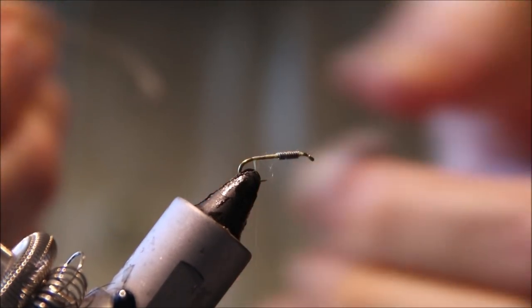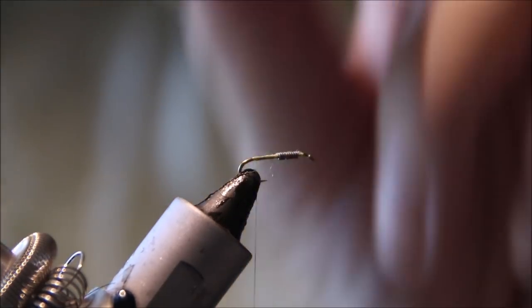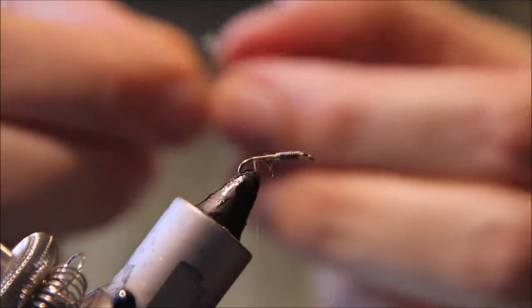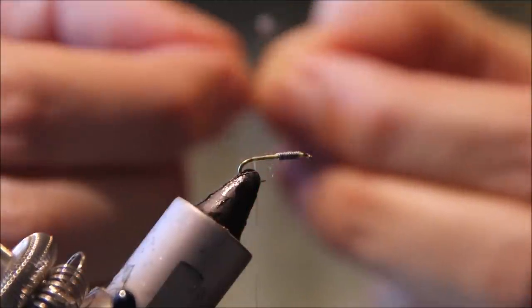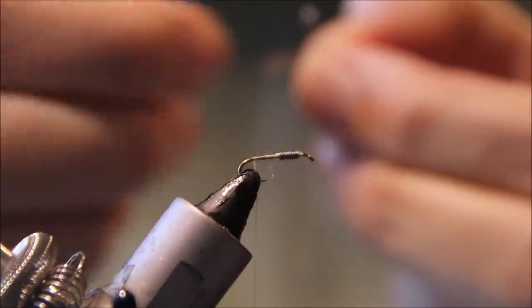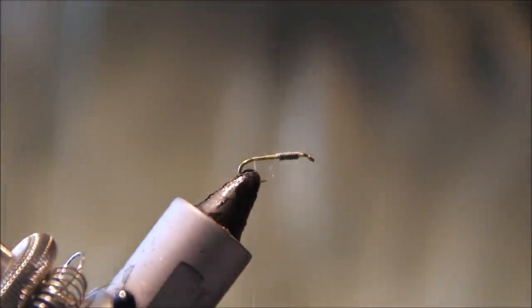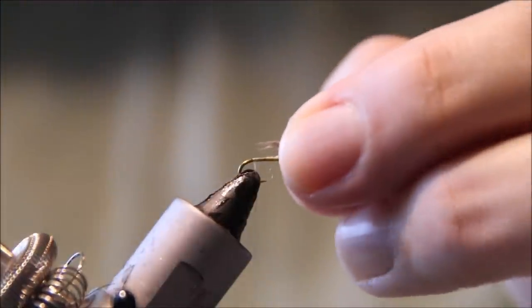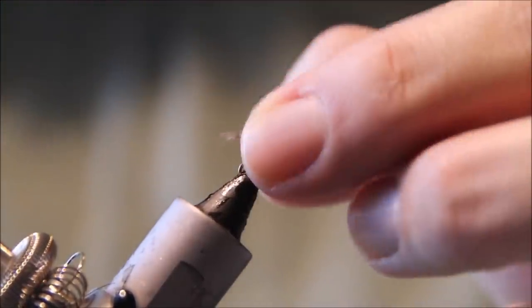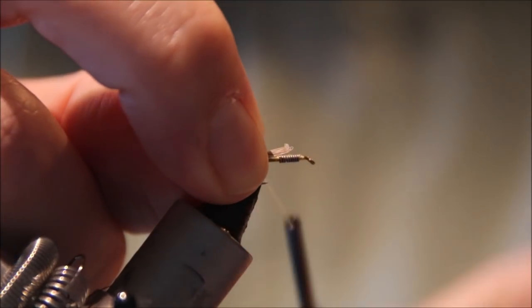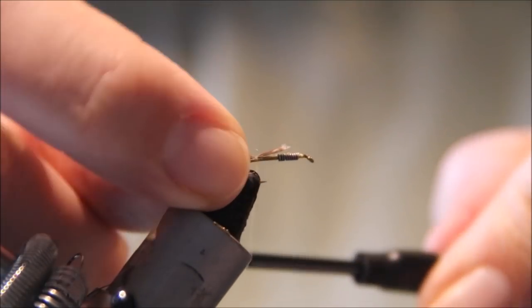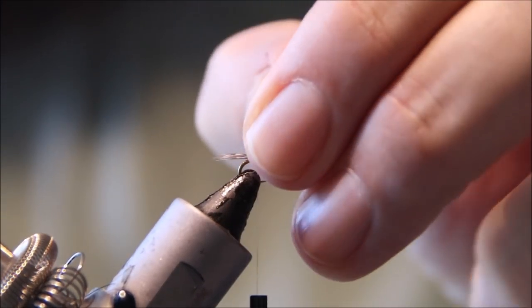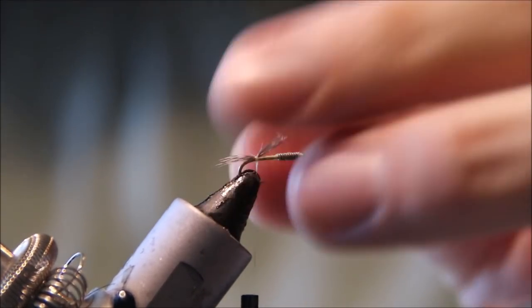I've taken a feather from the shoulder - basically a soft hackle. I'll grab a small sparse bunch of fibers for the tail, about the length of the abdomen. Don't count them, just a small bunch. Tie it in and trim it a bit as it's a little long.